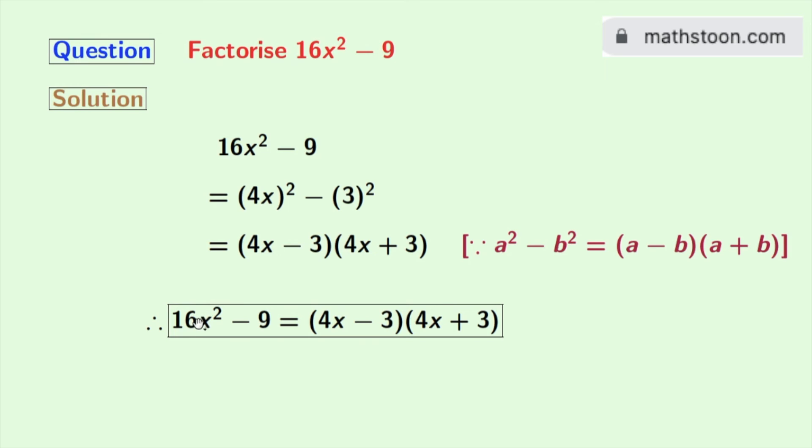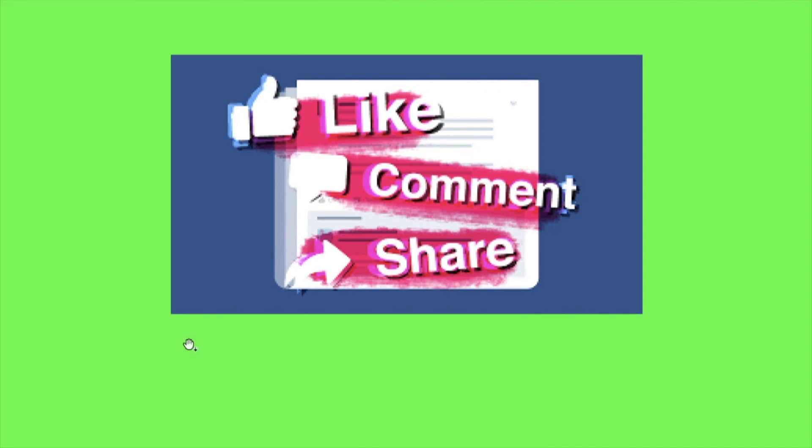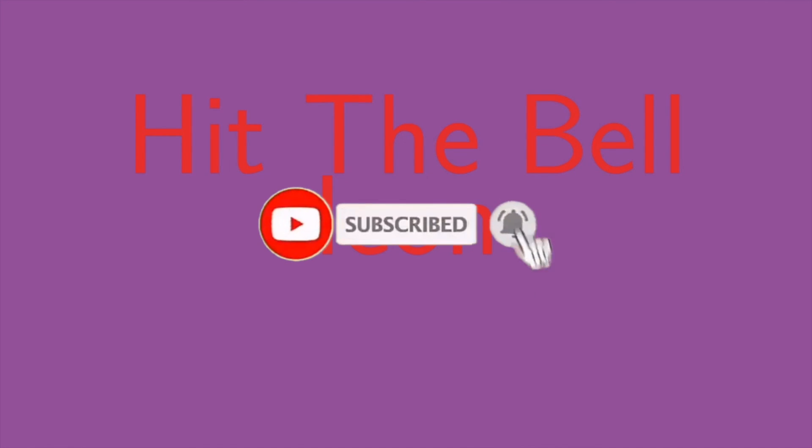So finally we get 16x² - 9 is equal to (4x - 3)(4x + 3). This is our desired factorization. Thank you for watching. Please like and share this video if you find it useful. Leave a comment in the comment box. Do not forget to subscribe this channel. Please hit the bell icon to get notification of new videos earlier.